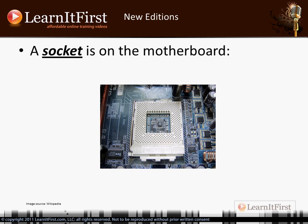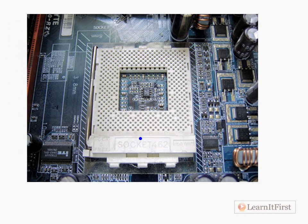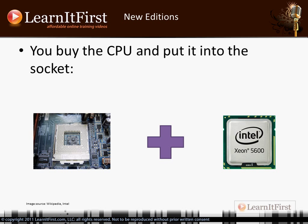A socket is on your motherboard — you can actually see it says 'socket' right there. That's where you put your CPU. So you buy a CPU and then you go put it into the socket. On the left is a socket; on the right is an example Xeon 5600 series CPU. This is probably basic stuff for most of you, but I think it's important that we cover all the bases so we don't leave anyone behind.